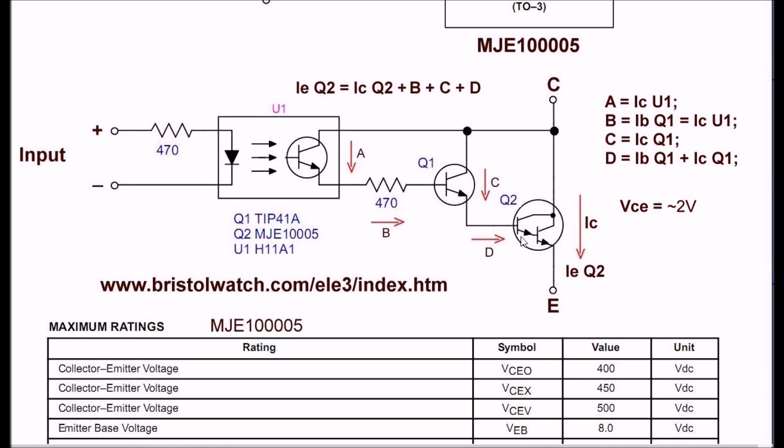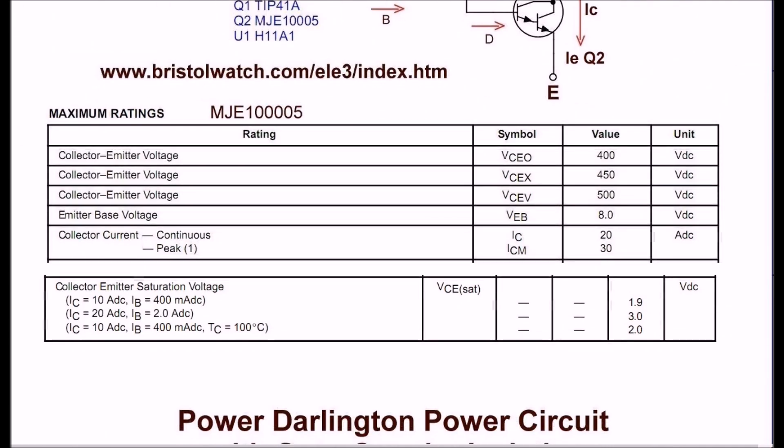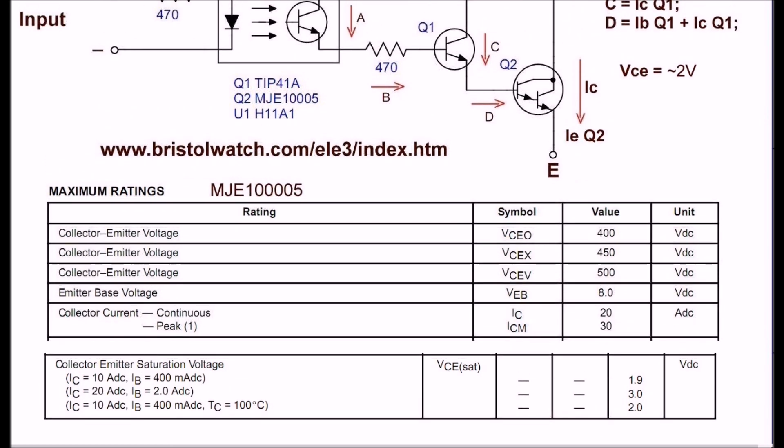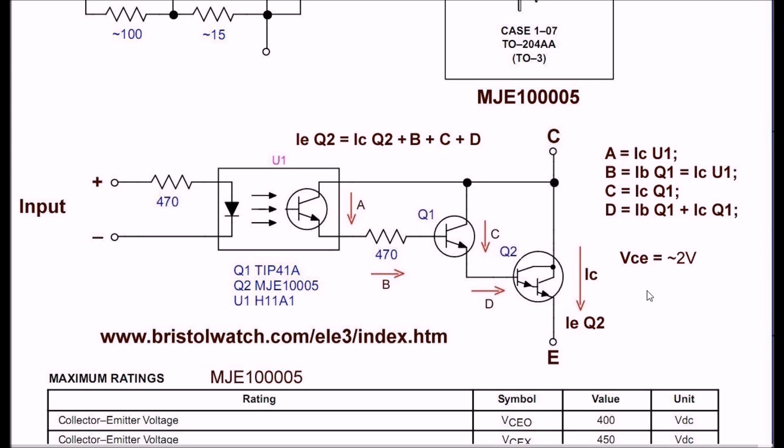Of course, all of this adds together. You'll have IB of Q2 multiplied by the HFE of Q2 to produce IC. But all of it, A, B, C, D, and so forth, plus IC out here, becomes IE of Q2. The advantage of this kind of circuit is all of the current from the optocoupler Q1 and Q2 are delivered to the load. I measured the voltage drop. That's VCE at saturation. It's 2 volts, and that fit right in to the range of, well, it says 1.9 if you're driving it with 400 milliamps DC at 10 amps. I was driving this at 3.6, and it came out about 2. Falls right within the specs according to the data sheets.